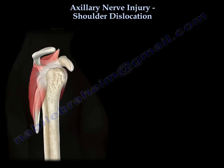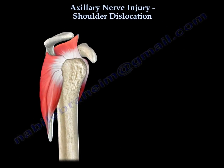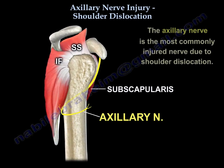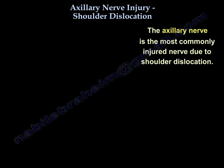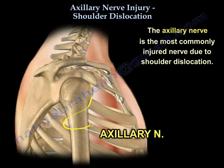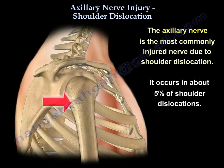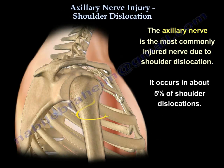Axillary nerve injury in shoulder dislocation: the axillary nerve is the most commonly injured nerve from shoulder dislocation. It occurs in about 5% of shoulder dislocations.